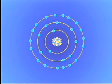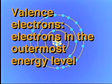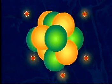The electrons in the outermost energy level are referred to as valence electrons. The valence electrons are very important in determining how an atom bonds with other atoms.